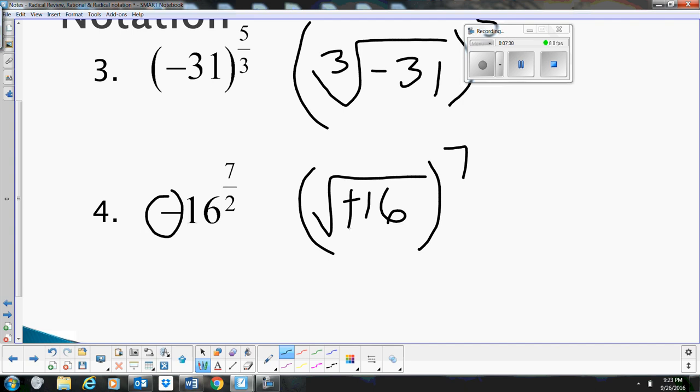It's actually on the outside. So you're going to have a negative 16, square root of 16, all to the 7th power, because that negative is not in the parentheses the way it is there. And plus, when you're taking the square root of a negative number, you get imaginary numbers. This one would have had no solution, had it been under the radical.